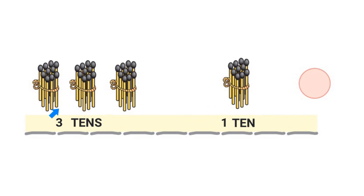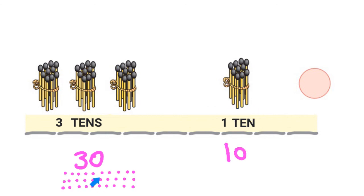In this picture I have 3 tens which is 30, and I have 1 ten which is 10. So I have 30 and then 31, 32, 33, 34, 35, 36, 37, 38, 39, 40. I have 40 matchsticks.